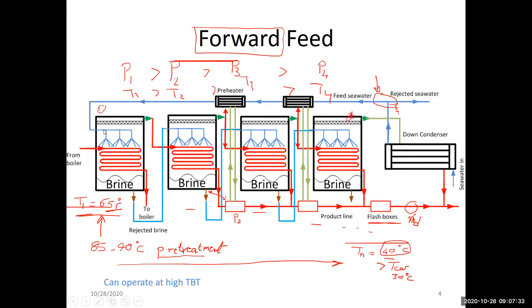So that is basically the flow in a forward feed system. It's called forward because the brine moves from effect one to two to three, sequentially, from one to N where N is the last effect. The rejected brine from each effect is sprayed into the next one.